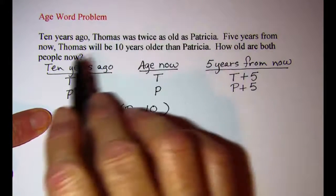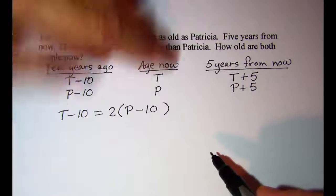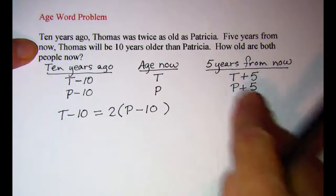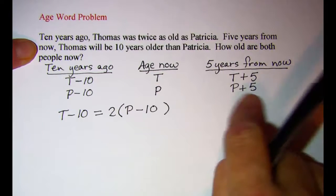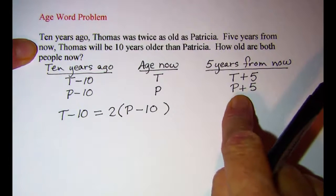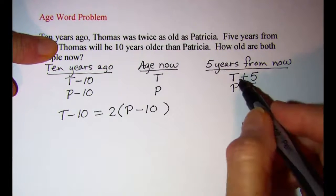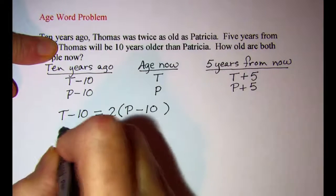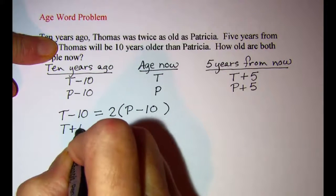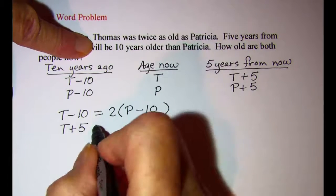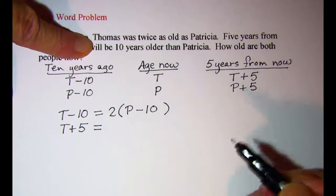Now let's use the second sentence to translate. It starts with five years from now, so I'll be using these expressions whenever I see Thomas or Patricia. Thomas, so T plus 5, will be, and that's our verb, where the equals goes.